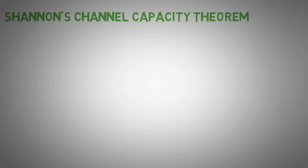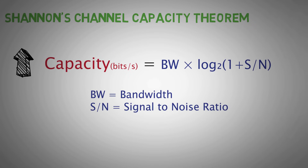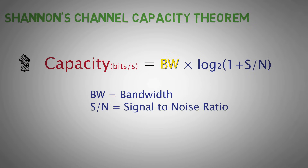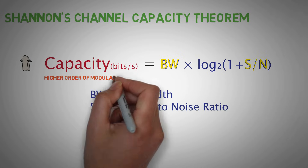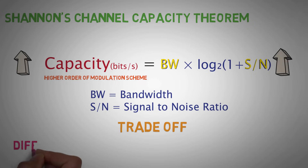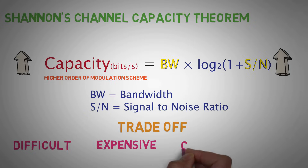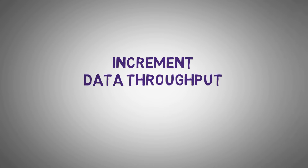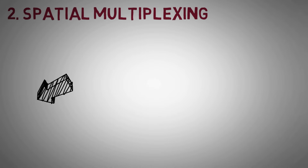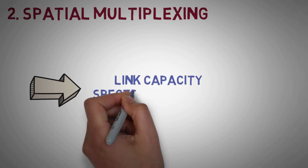As per Shannon's channel capacity theorem, there is a limit on the capacity of a channel for a given bandwidth. The capacity is also limited by the signal-to-noise ratio of the received signal. By using a higher modulation scheme, we can certainly increase channel capacity, but for that we have to have a high signal-to-noise ratio. This trade-off can be difficult, expensive, and sometimes we cannot compromise. Therefore, it is necessary to look at other ways of improving the data throughput for individual channels. Using spatial multiplexing, wireless communications can effectively utilize link capacity and spectral efficiency.